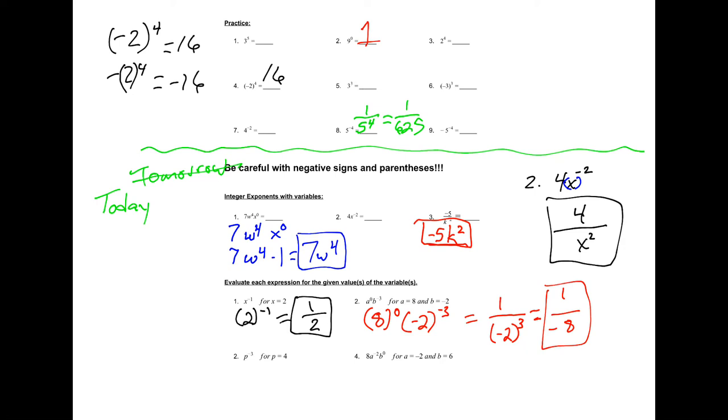I plug in 4 for P, we get 4 to the negative 3 which will just be 1 over 4 cubed. And when I do my math, 4 cubed is 64, so 1 over 64.